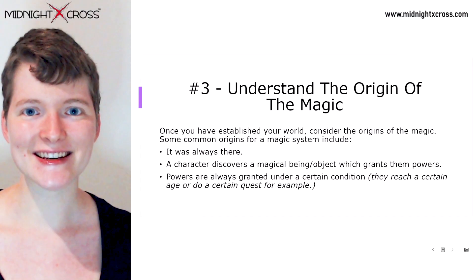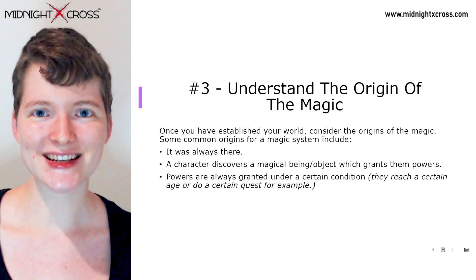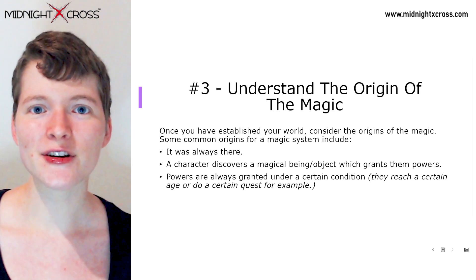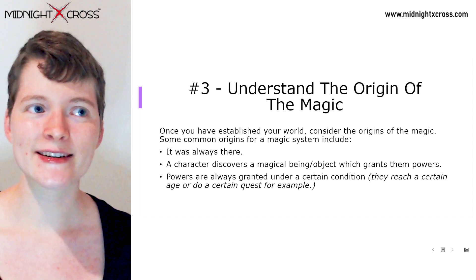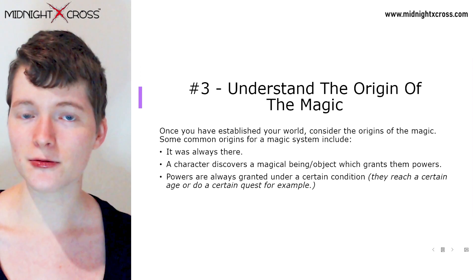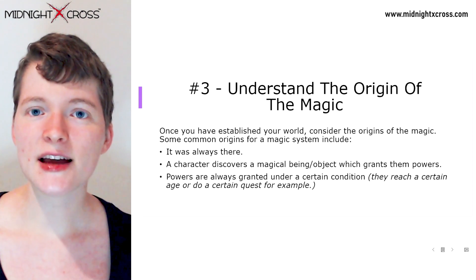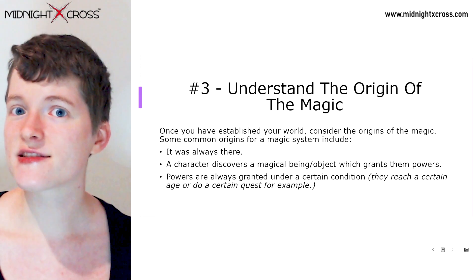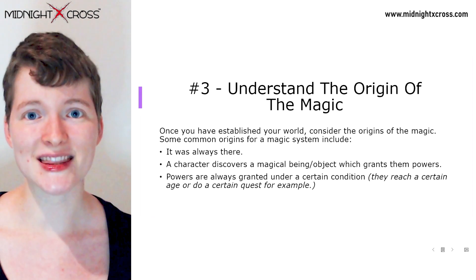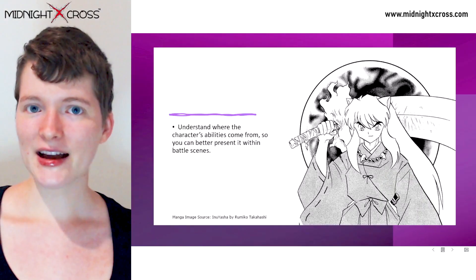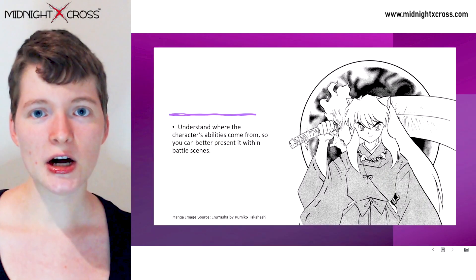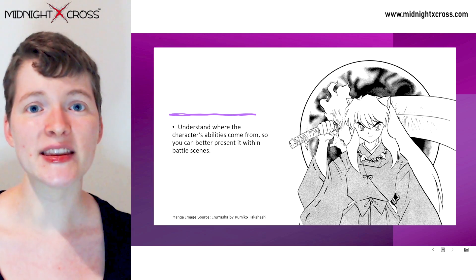Number three: understand the origin of the magic. Once you have established your world, consider the origins of the magic. Some common origins include magic that was always there in the world, so characters use abilities in their daily life and it's normal. A character discovers a magical being or object which grants them powers, or powers are granted under a certain condition — for example, the character reaches a certain age or completes a certain quest. Understanding where your character's abilities come from can also help you to better present them in battle scenes or moments where they need to use those abilities.